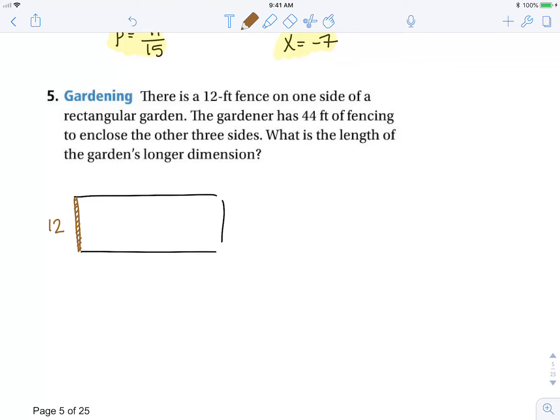There is a 12-foot fence on one side of a rectangular garden. The gardener has 44 feet of fencing to enclose the other three sides. What is the length of the garden's longer dimension?